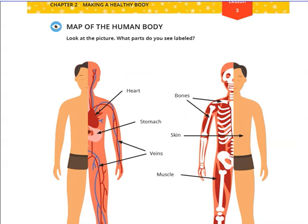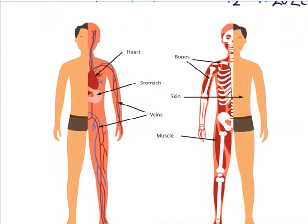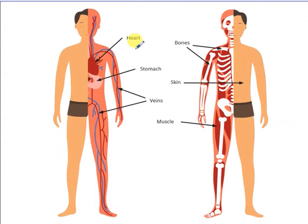Open your book to page 36 and write the date. Look at this picture. This is the label of the picture. This is what? This is the heart. This is called the stomach — the food goes inside our body and goes to this stomach. This blue line is called veins.